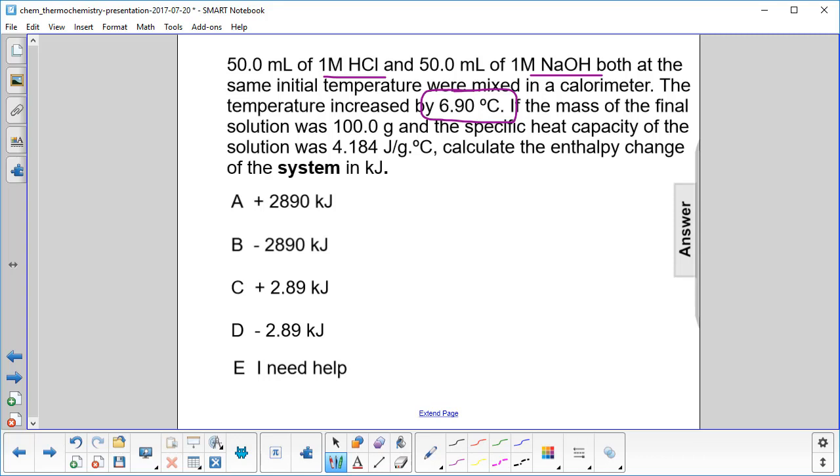That means delta T is plus 6.9. The mass of the final solution is 100 grams and here is our specific heat capacity. Find the enthalpy change of the system.